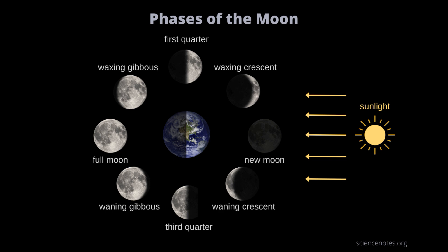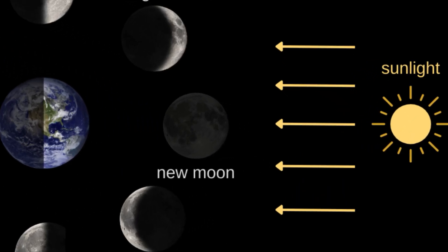There are eight distinct phases in this cycle. Let's go through each one. New moon. During a new moon, the moon is positioned between earth and the sun. The side of the moon facing us receives no direct sunlight and is not visible from earth.